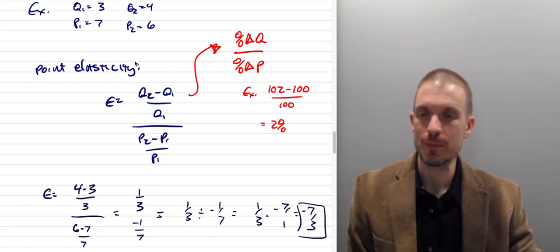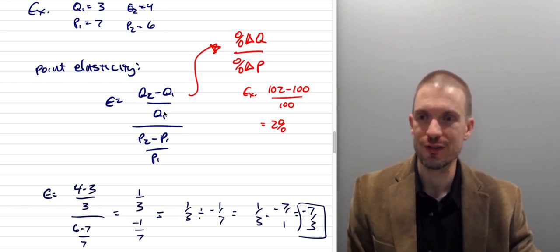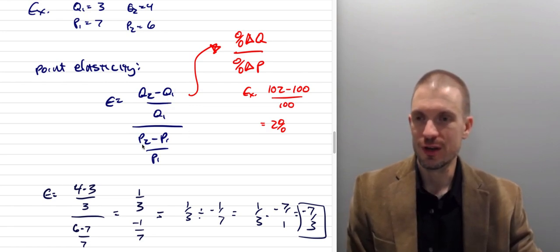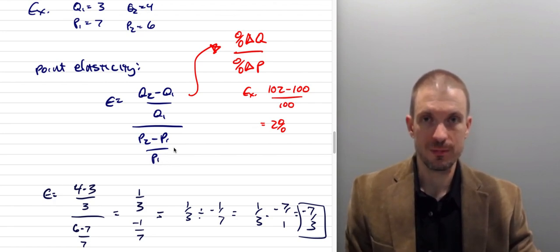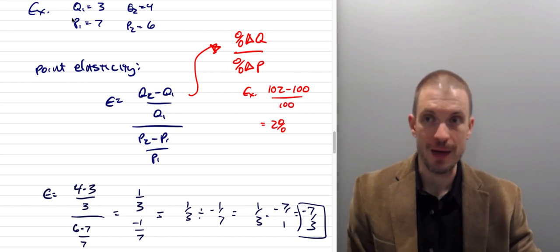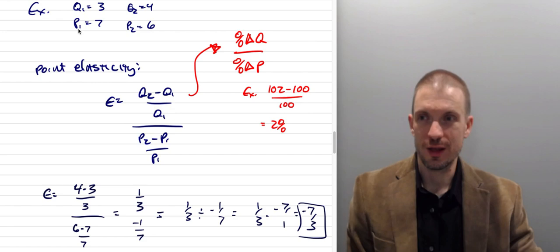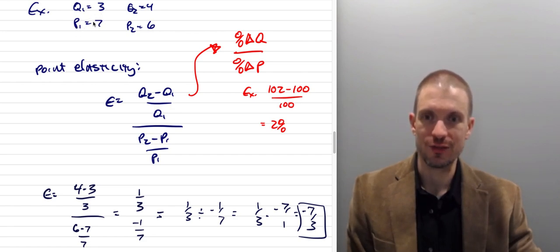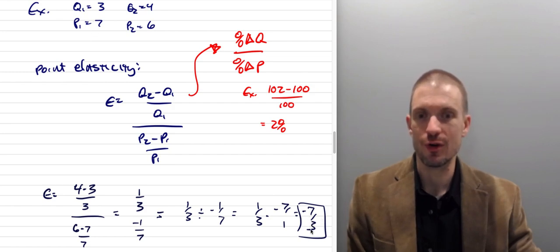But anyway, so how do we use the point elasticity formula? It's just the change in quantity divided by the starting point, divided by the change in price, divided by the starting point in price. And what this is doing is this is literally computing the price elasticity of demand at point 1, where Q1 and P1, so at the point 3, 7 on the demand curve, that's where the demand has an elasticity of minus 7 over 3.